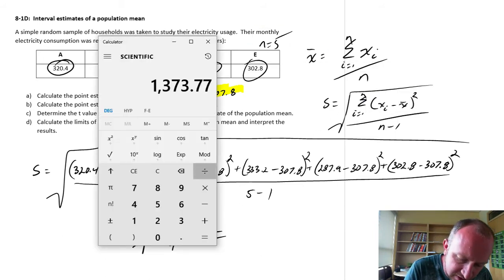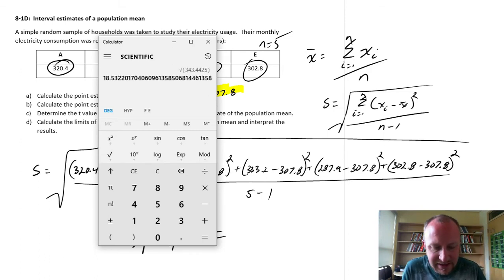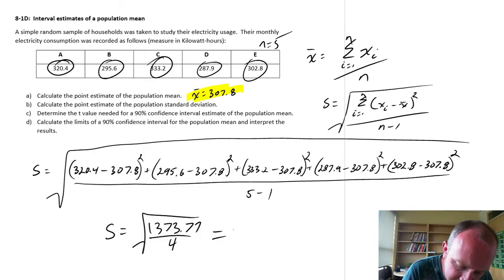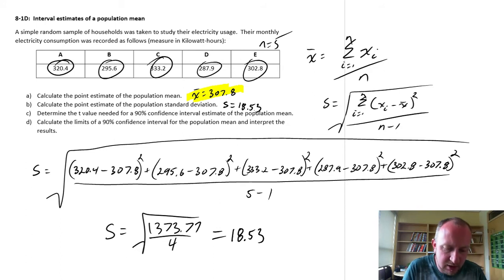We need to divide that by 5 minus 1 is 4 and take the square root of everything. So I'm going to divide this by 4 and square root, so 18.53 is our standard deviation. So S is 18.53. Good.